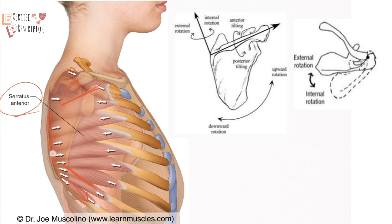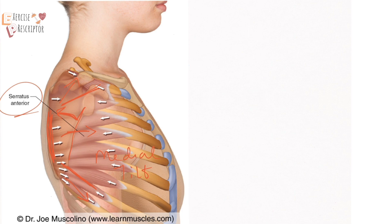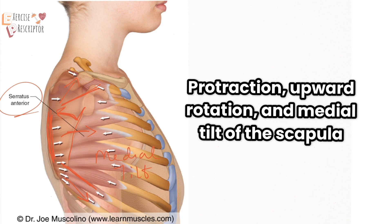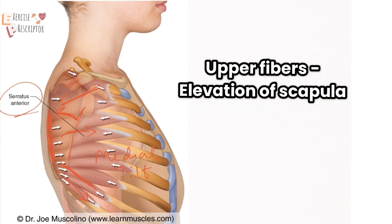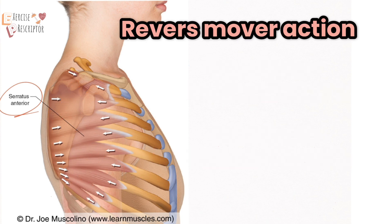The serratus anterior attaches to the medial border of the scapula on the anterior aspect. When it pulls in this way, it helps to open up the lateral border of the scapula — that is called medial tilt of the scapula. So when the serratus anterior contracts, it produces the combined motion of protraction, upward rotation, and medial tilt of the scapula. The upper fibers produce elevation and the lower fibers produce depression of the scapula.